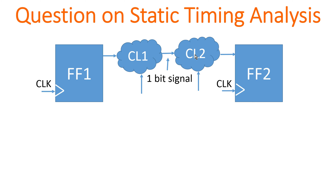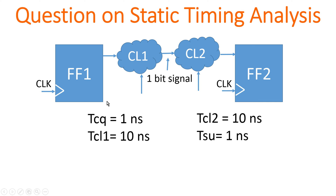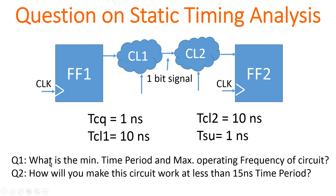Now let me tell you the propagation delays involved in the design. TCQ is the clock-to-Q delay of both flip-flops, which is 1 nanosecond. TCL1 is the combination logic delay of combination logic 1, which is 10 nanoseconds. TCL2 is the propagation delay of combination logic 2, which is also 10 nanoseconds. TSU is the setup time of both flip-flops, which is 1 nanosecond.